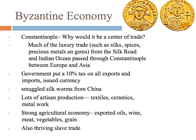The last major thing is the economy. Constantinople is the center of trade — why? Because of its location, right between Europe and Asia, a crossroads of trade. Trade routes like the Silk Road pass through there, and it's pretty close to the Indian Ocean trade. The government put a 10% tax on all trade that went through here, which is how they made a lot of money. They also issued currency. They had lots of artisan production — textiles, ceramics, metal goods. They even tried to learn silk production, which was a closely guarded secret in China — they smuggled silkworms over and started producing it. They also had a very strong agricultural economy, producing vegetables, grains, olive oil, wine, and all kinds of things.